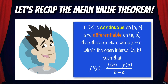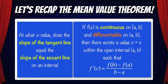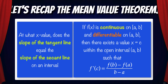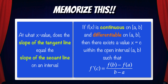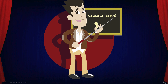Let's recap the mean value theorem. If f(x) is continuous on the closed interval a,b and differentiable on the open interval a,b, then there exists a value x equals c within the open interval a,b such that f prime of c equals f(b) minus f(a) over b minus a. Remember, this theorem is just a fancy way of saying at what x value does the slope of the tangent line equal the slope of the secant line on an interval. Commit this theorem to memory — it will help you solve mean value theorem problems with confidence. Just keep on practicing. That's how you rock calculus!